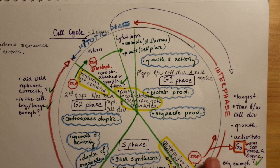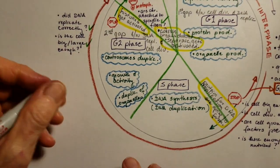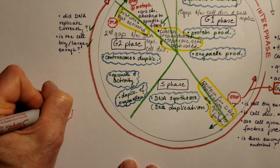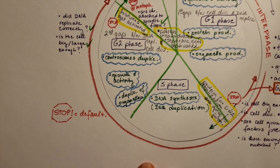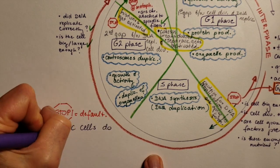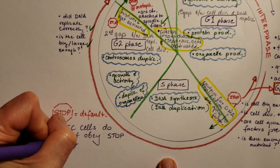The takeaway from the cell cycle is, besides all of them, that the stop sign in a cell's life is the default command. Cancer cells do not obey the stop signs. They do not stop even if the answer is no for the questions.